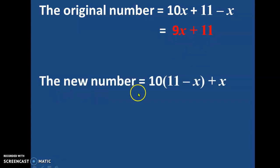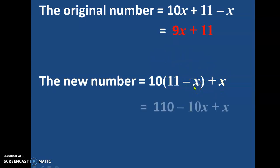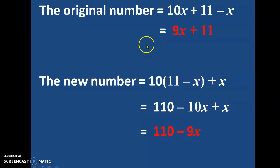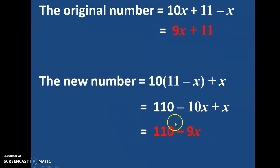So the new number is 10 into (11 minus X) plus X. Let us simplify this one also. Taking 10 inside, we get 110 minus 10X plus X. Simplifying further, we get 110 minus 9X. So the original number is 9X plus 11 and the new number is 110 minus 9X.